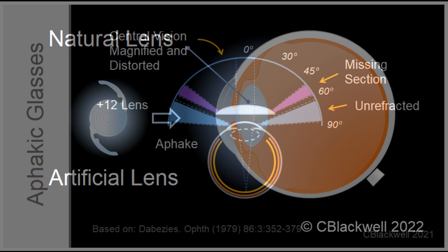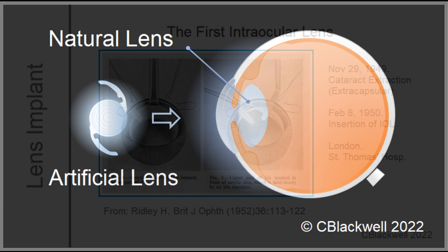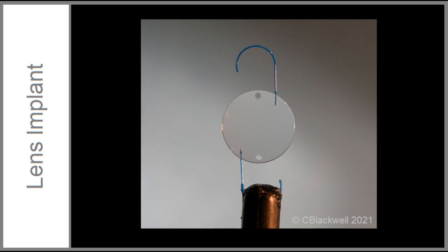The real answer was to create an artificial lens. In a bold step, the first one was implanted in 1949. Since then, the aim has been to develop an artificial lens that functions as well as your natural lens — no easy task.